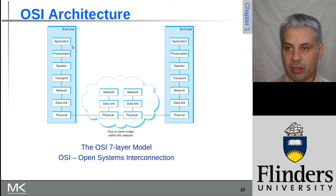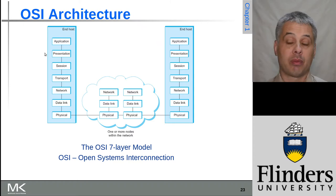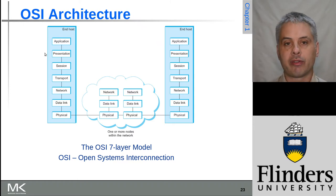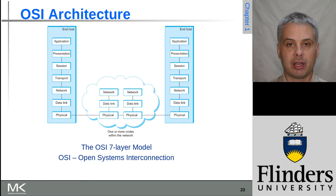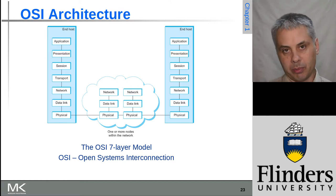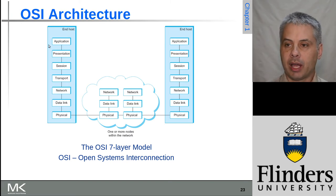The presentation layer tends to be absorbed into the application layer these days. Presentation covers things like how many bits are in a data word — for example, whether we're using 16-, 32-, or 64-bit integers, whether they're signed or unsigned, and whether they're sent least-significant or most-significant byte first — that is, the byte order.